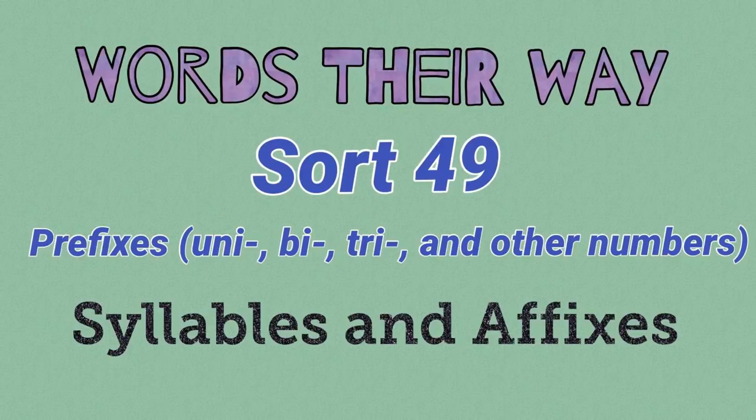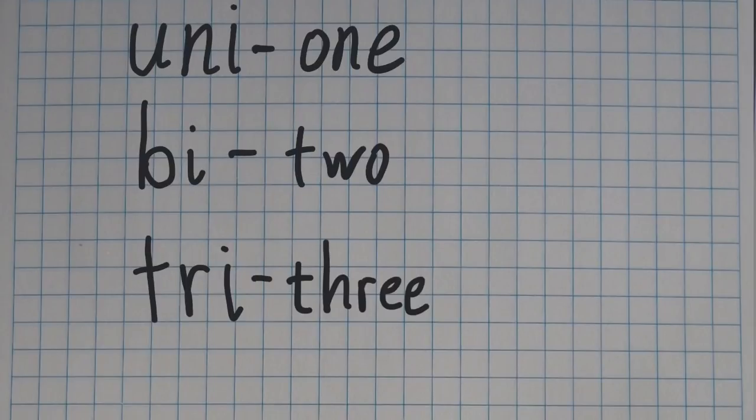Let's have a look at the prefixes and the meanings of the words. Let's start with the meanings of these prefixes, and it's very simple. Uni means one, bi means two, and tri means three.